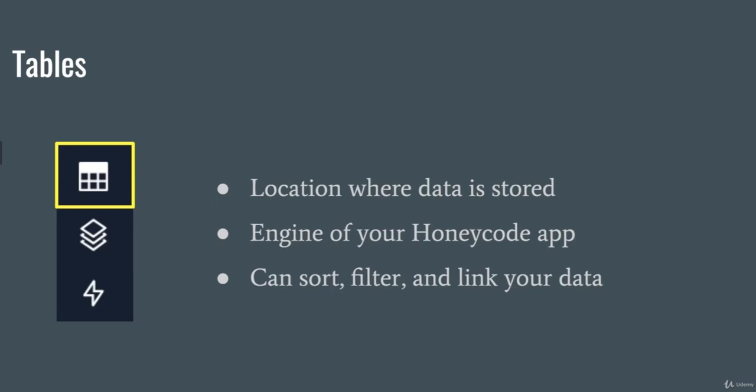Let's look at an example of linking your data. Say you own a company that goes out to people's houses to check on their AC. You'd have a customer list and another table with their addresses and what type of AC they have. Honeycode allows you to link all that together, so instead of searching between different spreadsheets, you can hover over a customer's name like Bob and it'll show you all the data that's linked to him, making your process more efficient.